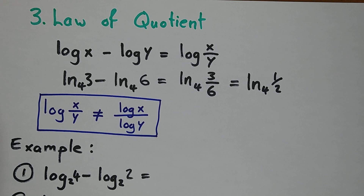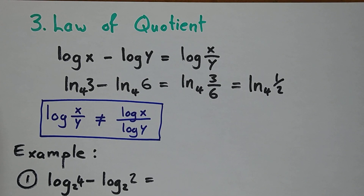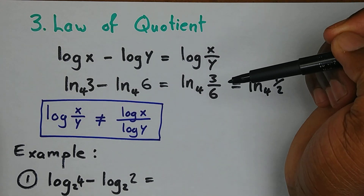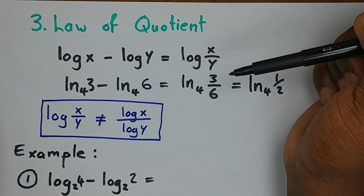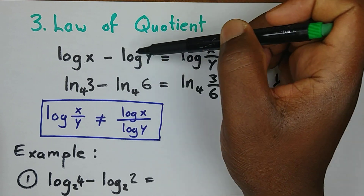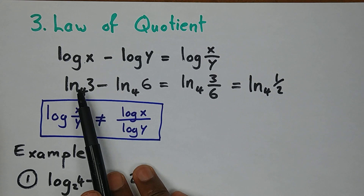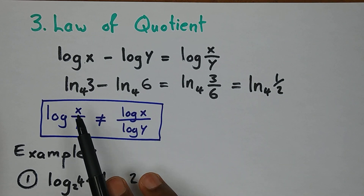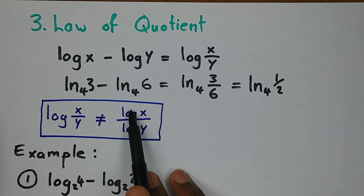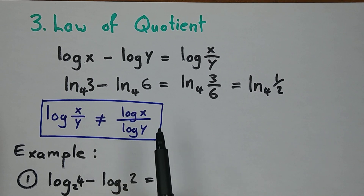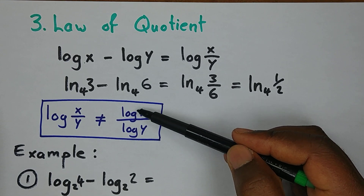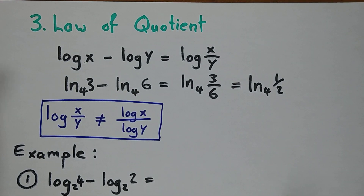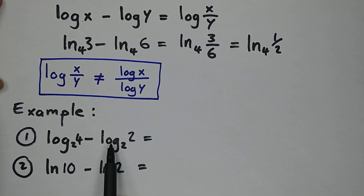Rule 3 is the Law of the Quotient — where you have two numbers dividing. It also works on two conditions: the bases must be the same, and the two logs must be subtracting. We then divide the arguments. Important: dividing two arguments is not the same as saying log(x/y) — these are two completely different statements. It's a common mistake — dividing arguments does not mean dividing logs.